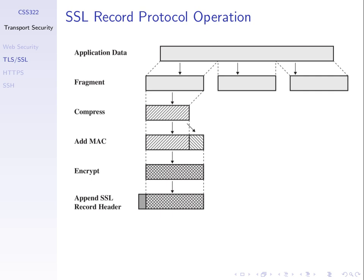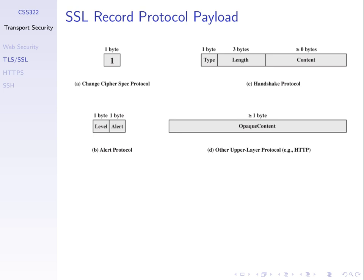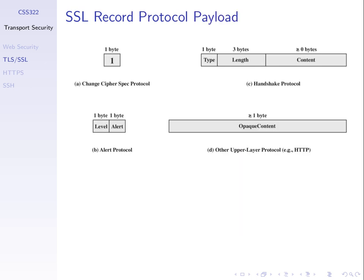Looking at the SSL packet in more detail, we have a header with four fields, and then the encrypted data, which consists of the compressed data and the MAC. There are four types of content: change cipher, handshake, alert, or the application protocol.